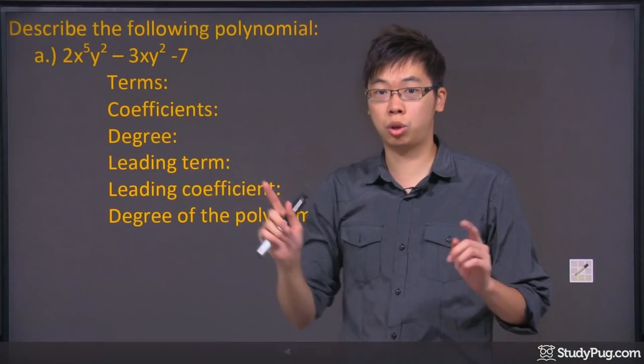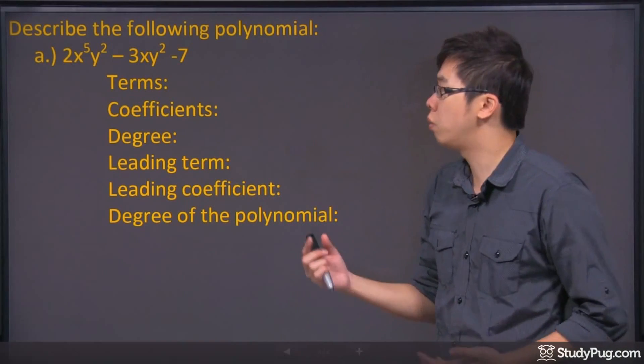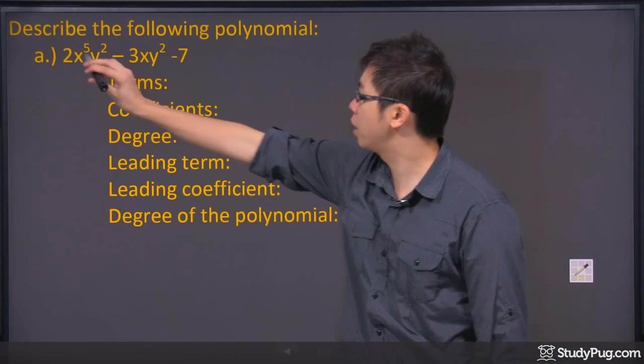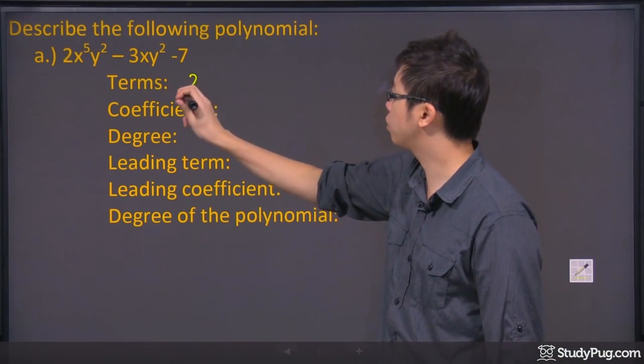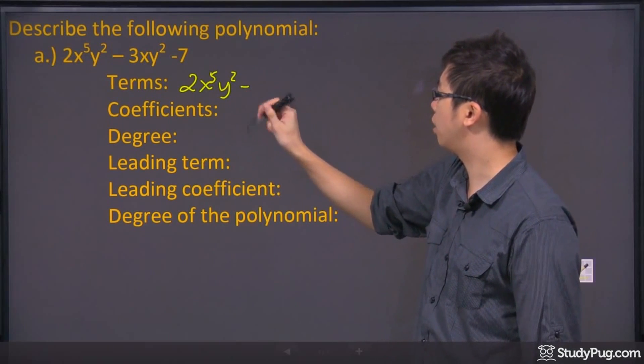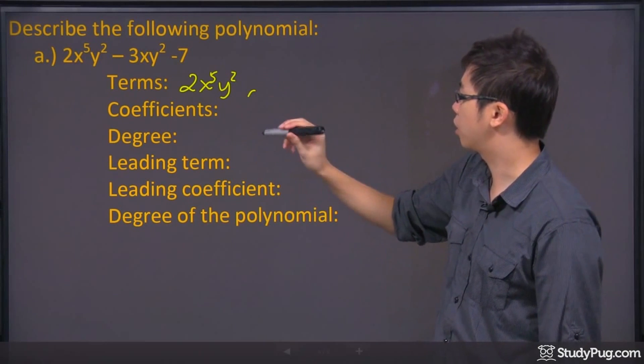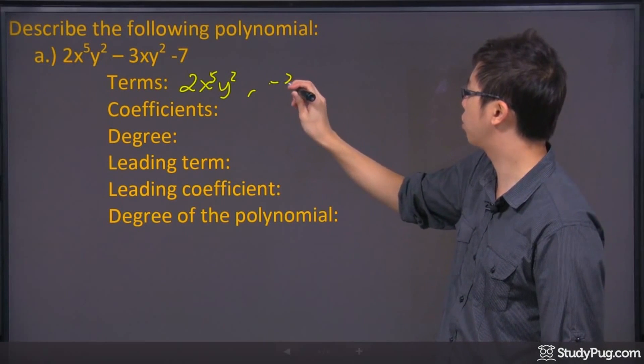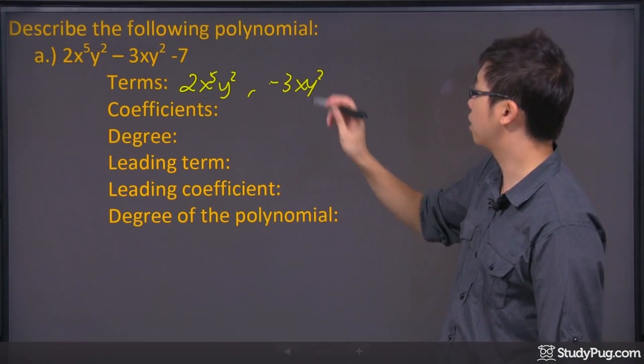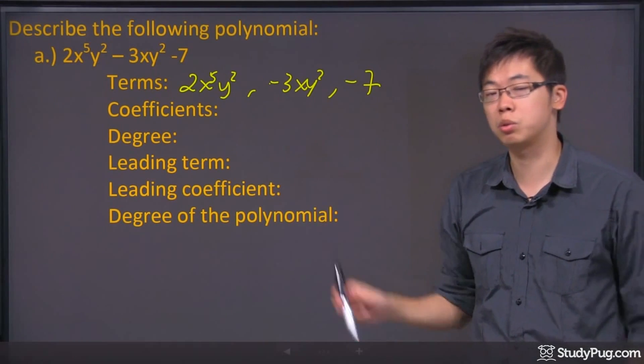So the first one says terms. What that means is, what do you see? How many terms do you have? We actually have three different terms. So we got the 2x to the power of 5 and y squared. We actually don't need a minus sign, we can just go comma right there. And we can go negative 3. We have a second term right here. And finally, we have the negative 7 at the very end. So three different terms.